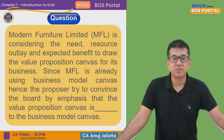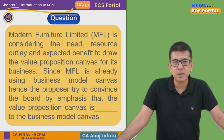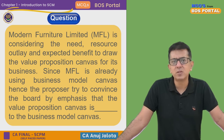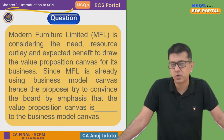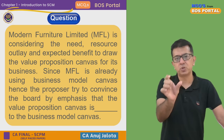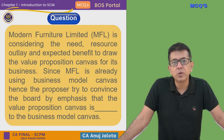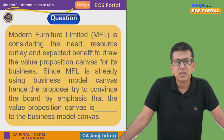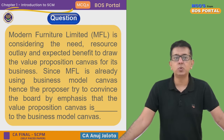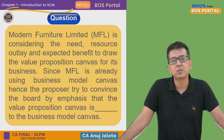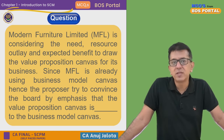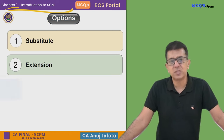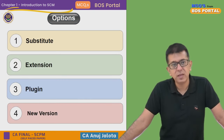This is MCQ number five that we are doing — Chapter 1: Introduction to SCM. The question is: Modern Furniture Limited is considering the need, resource outlay, and expected benefit to draw a value proposition canvas for its business. Since MFL is already using the business model canvas, their proposer is trying to convince the board by emphasizing that the value proposition canvas is dash to the business model canvas. The four options are: it is a substitute, it is an extension, it is a plugin, or it is a new version.